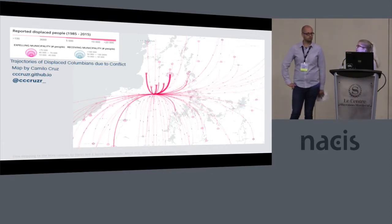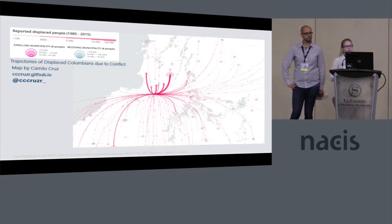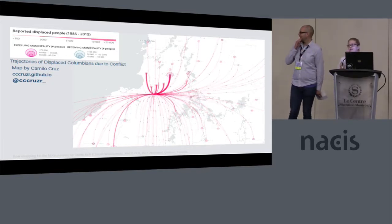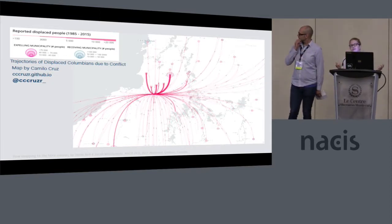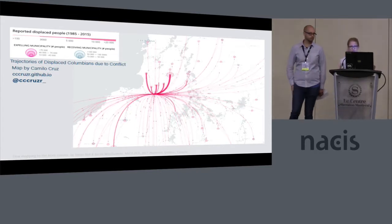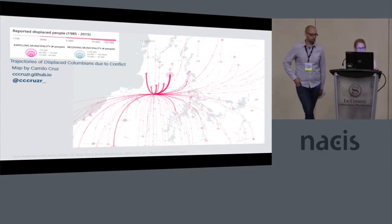We're going to close with some samples. If we don't have time to show the samples, please come find us afterwards, because we have samples of people who have taken the Canvas flow map layer and done stuff with it in the wild. All right, turning it over to Jacob.